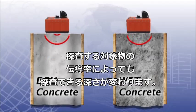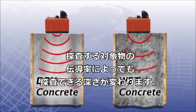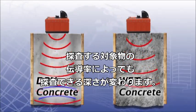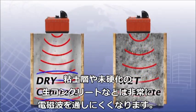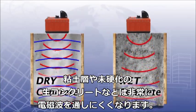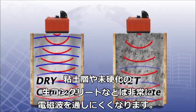Survey areas with high conductivity can limit the depth and effectiveness of ground-penetrating radar. An example of this would be clay soils or uncured or green concrete.